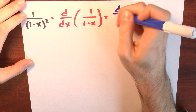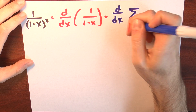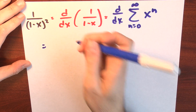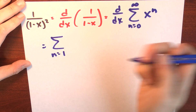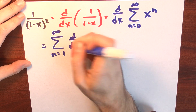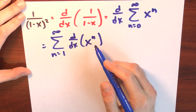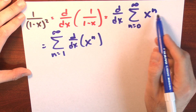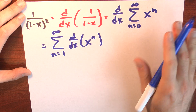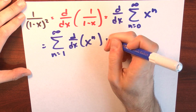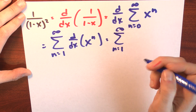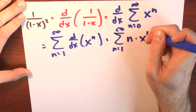So the derivative of 1 over 1 minus x is this function that I'm interested in. Let's differentiate the power series term by term. This is the derivative of the sum n goes from 0 to infinity of x to the n. Differentiating term by term, this is the sum n goes from 1 to infinity of the derivative of the nth term, the derivative of x to the n. Note that I changed from n equals 0 to n equals 1, because when I differentiate the n equals 0 term, that's the derivative of a constant, which is just 0. By the power rule, that's n times x to the n minus 1.